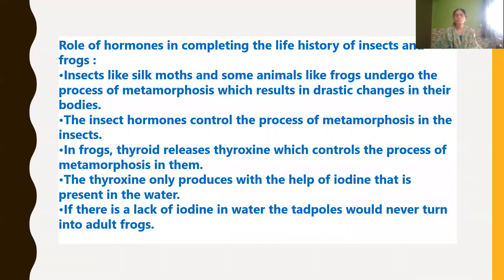Hormones also play an important role in completing the life history of insects and frogs. We discussed the life cycle of the silk moth and how the frog undergoes metamorphosis. Metamorphosis is a process which results in a drastic change in the body. Insect hormones control the process of metamorphosis in insects. In the same way, in frogs, the thyroid releases thyroxin, which controls the process of metamorphosis.